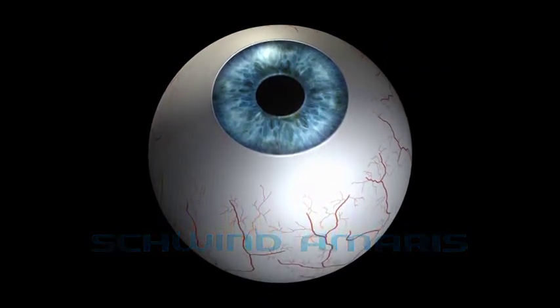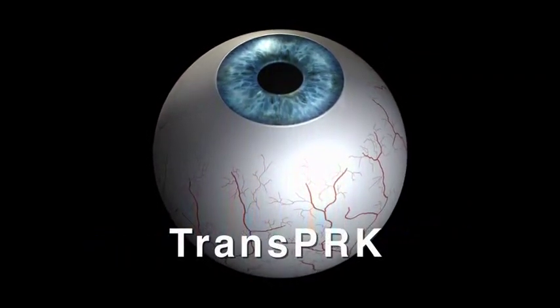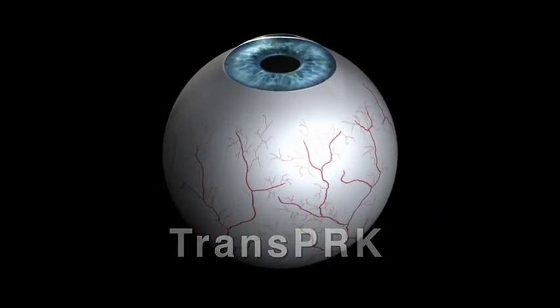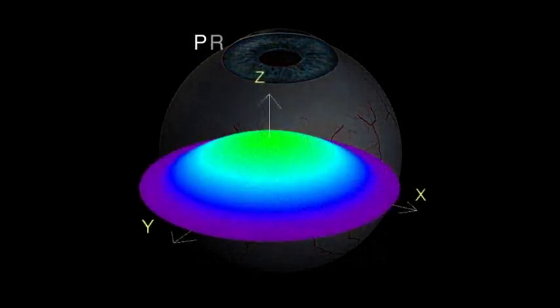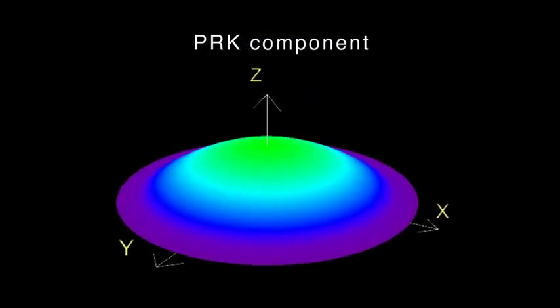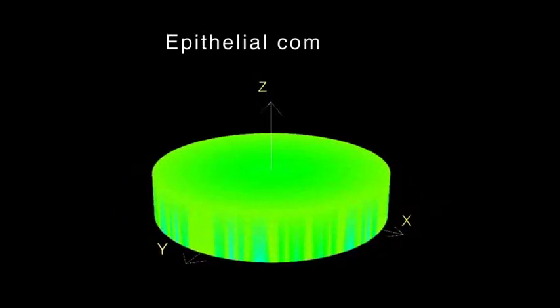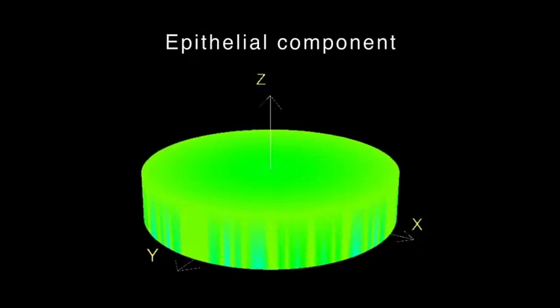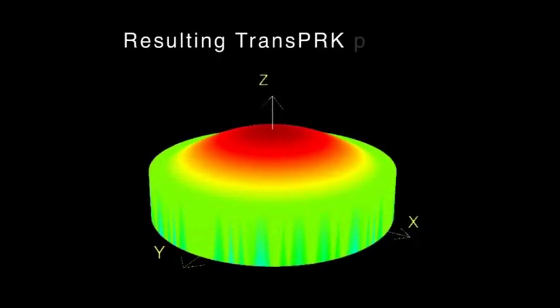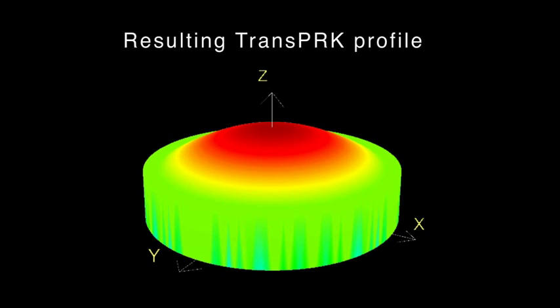The Schwindermaris laser systems provide a sophisticated approach to carry out no-touch all-laser surface ablations. TransPRK treats refractive errors by superimposing an aspheric ablation profile with a defined epithelial thickness profile based on literature values and mean epithelial profiles of large-based populations.